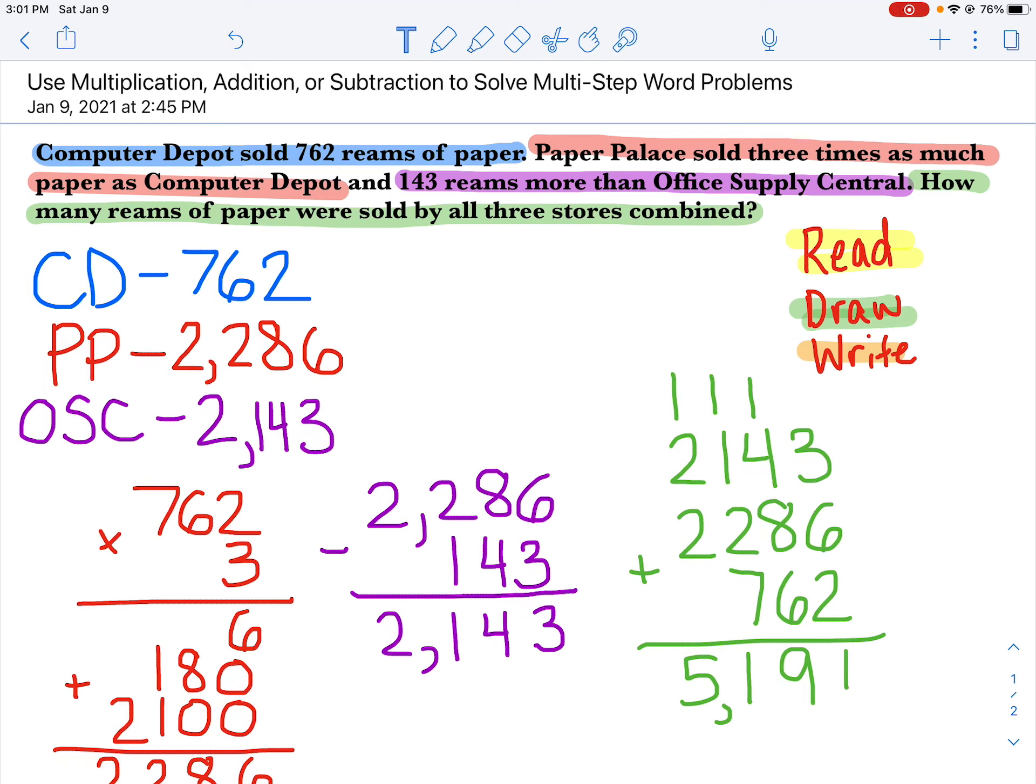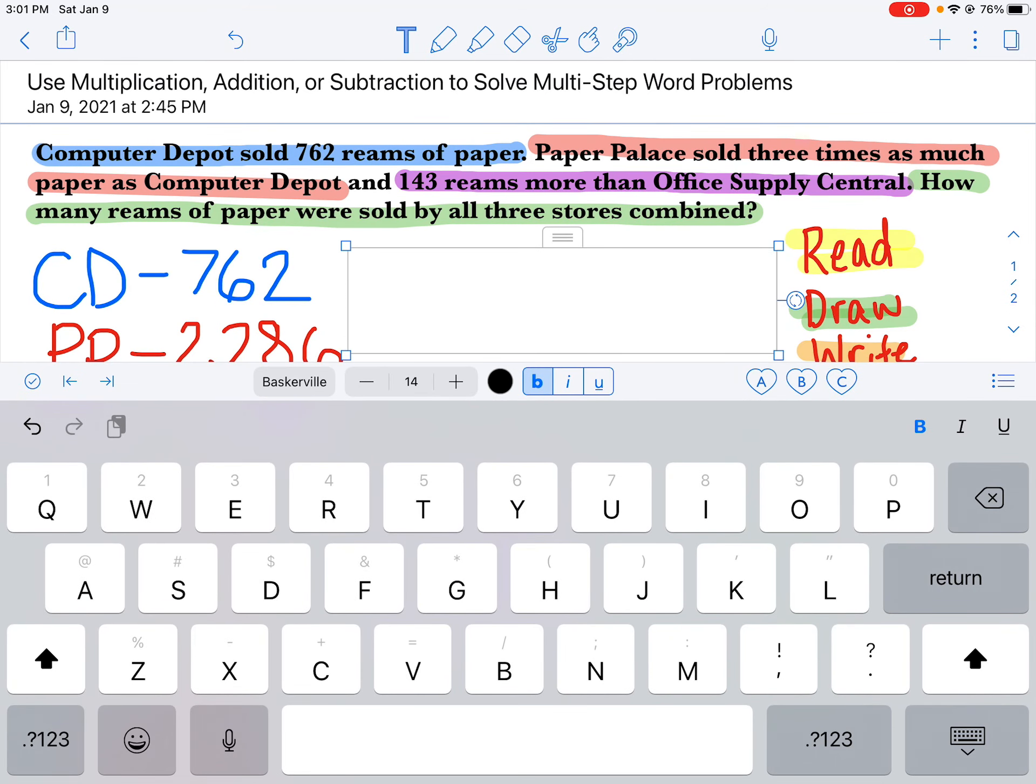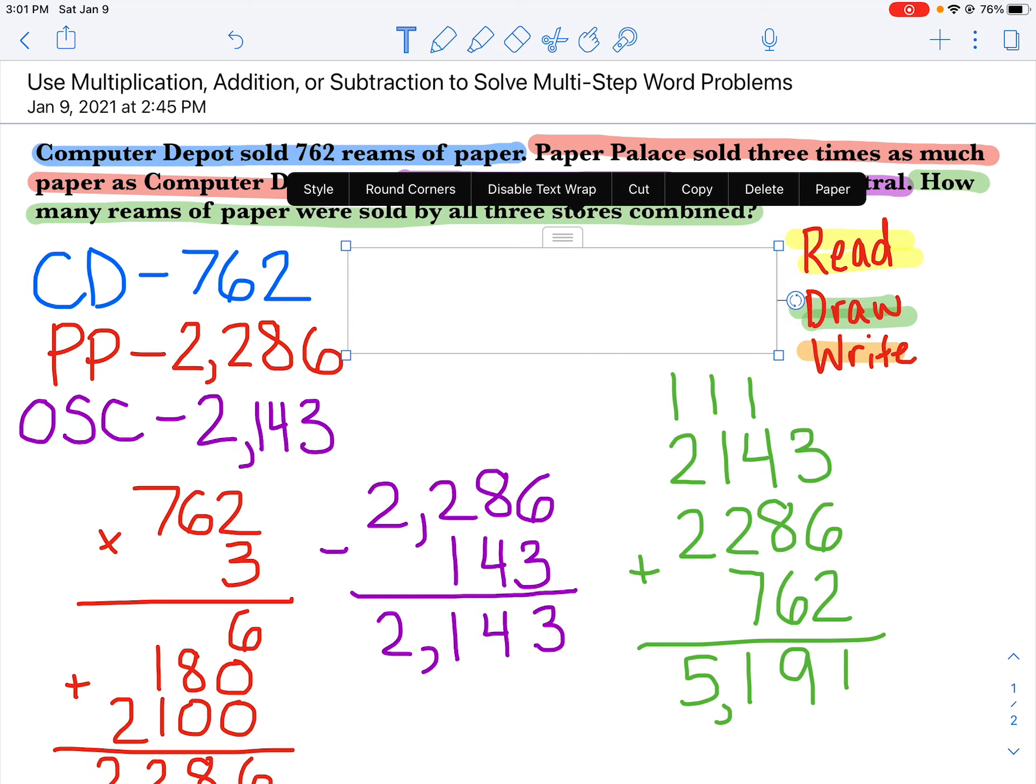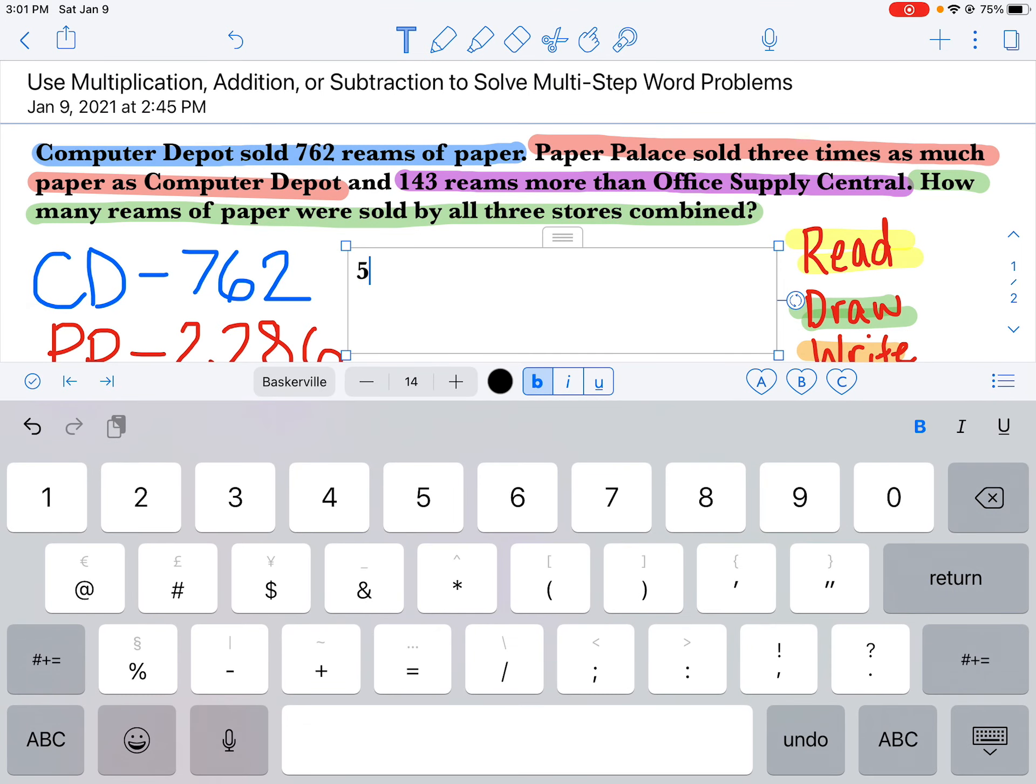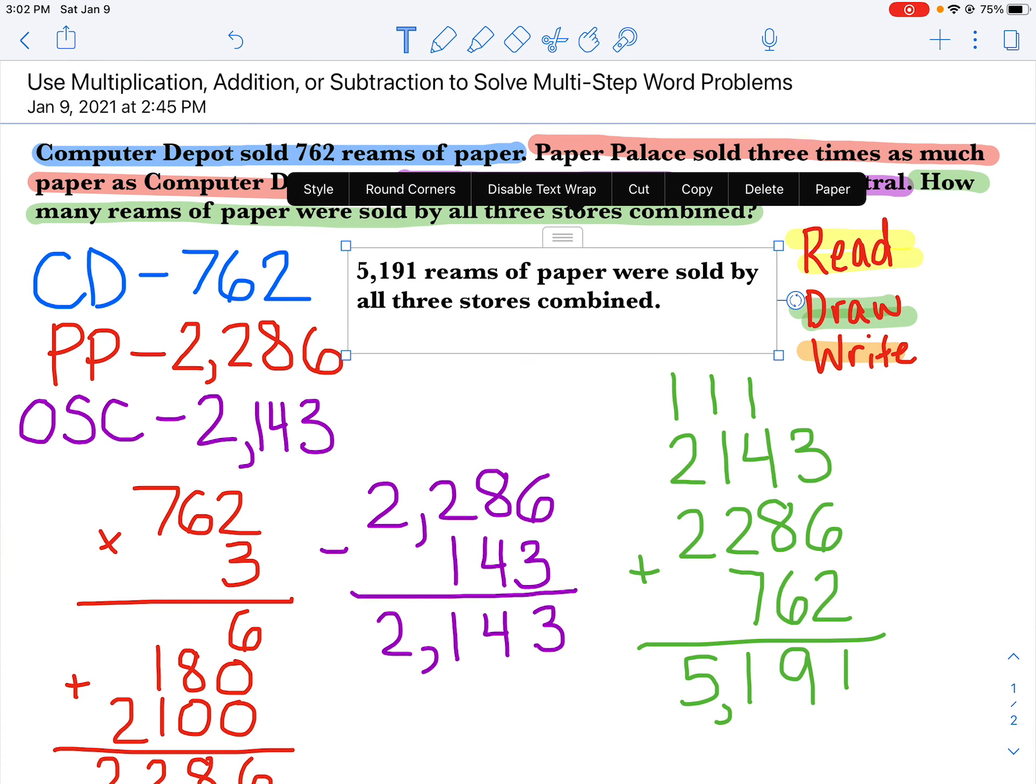So I'm going to actually include a text box, and I think I'll put it right here. And I'm going to go back to the question. How many reams of paper were sold by all three stores? Okay, so how many reams of paper? 5,191. 5,191 reams of paper, and I can always look right back up. Were sold by all three stores combined. There's my statement. Okay?